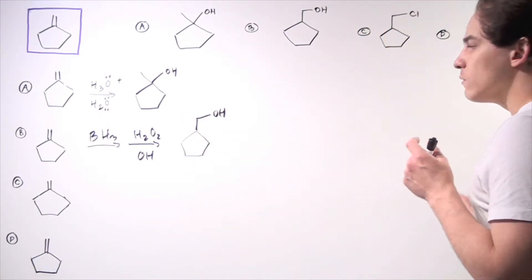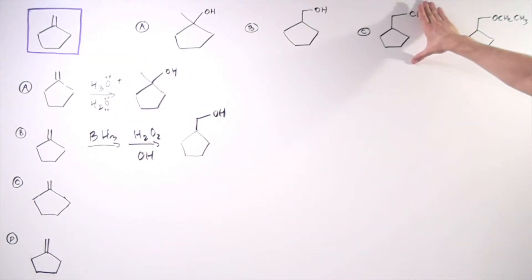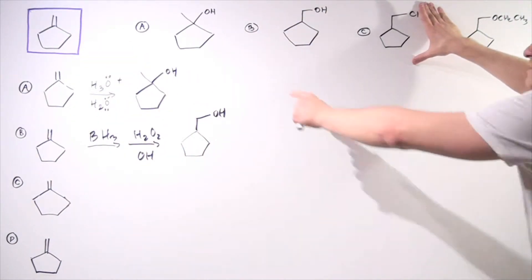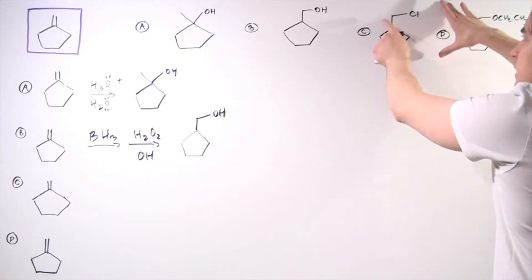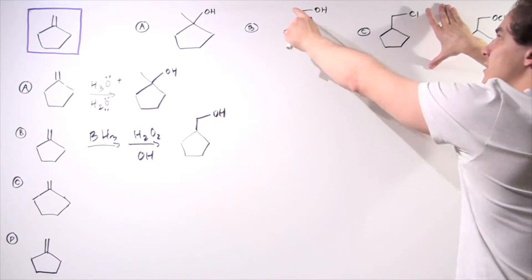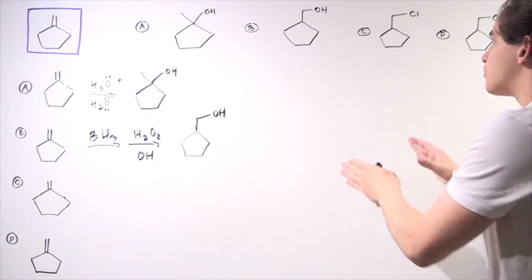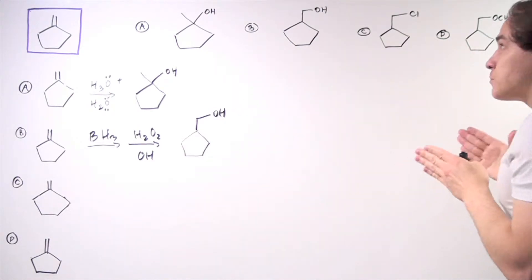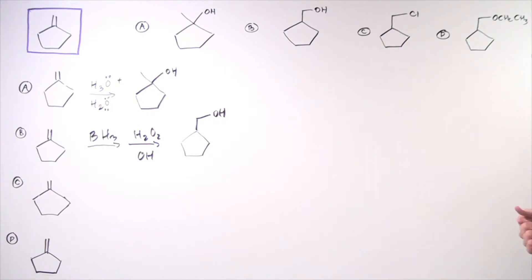Now we want to go from our starting material to product C. Notice that B and C are very similar - both groups are attached to the least substituted carbon. To produce C, we must first produce B, then add hydrochloric acid to produce C from B.